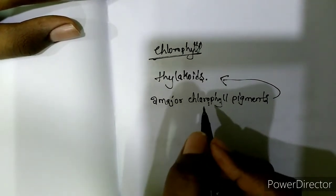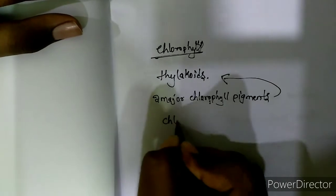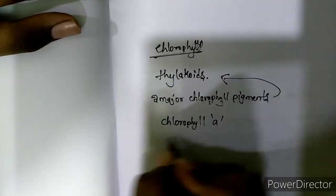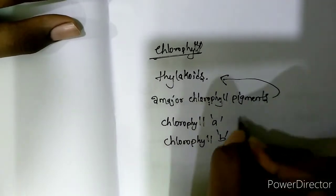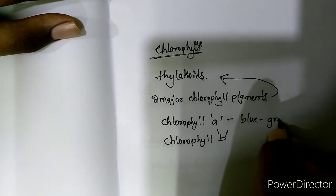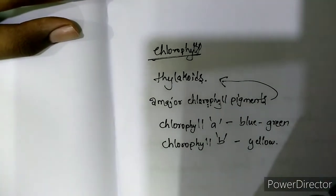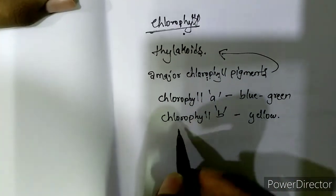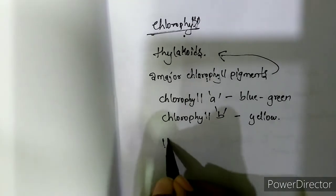Chlorophyll also helps in preparation of food. There are two types of chlorophyll: chlorophyll a and chlorophyll b. Chlorophyll a is blue-greenish in color and chlorophyll b is yellow in color. If we look at the structure of chlorophyll, it is similar to the structure of hemoglobin.